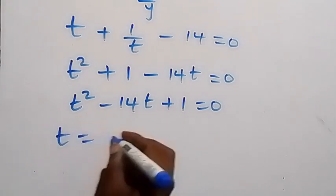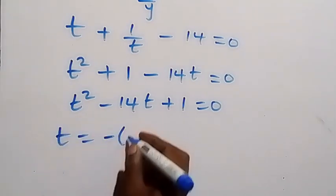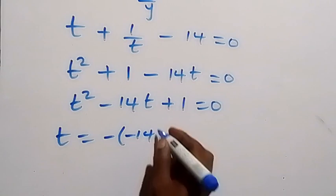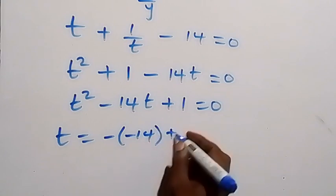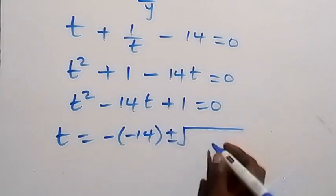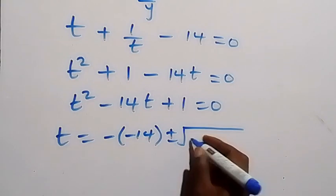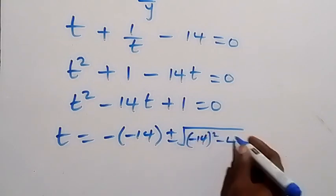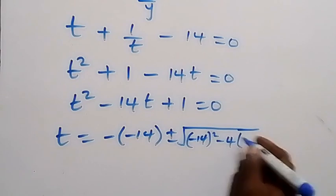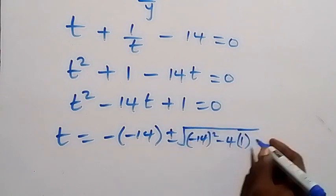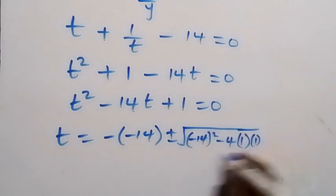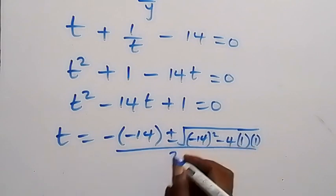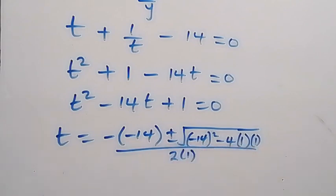We have t now equals minus b, that's minus negative 14, plus or minus square root of b squared, that's negative 14 squared, then minus 4. a is 1, then c is also 1. Then all over 2a, that's 2 times 1.